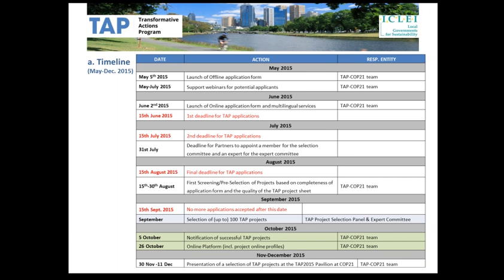In July, partners will be invited to appoint a member to sit in the TAP selection panel and the expert committee. The selection process will start from the 15th of August. In October, successful applicants will be notified. And finally, during COP21, the 100 projects will be presented in the pavilion.